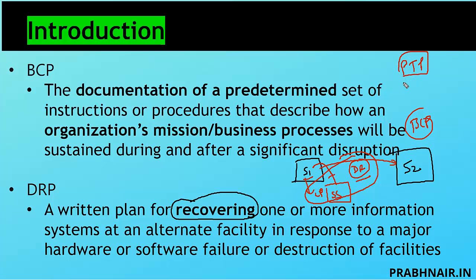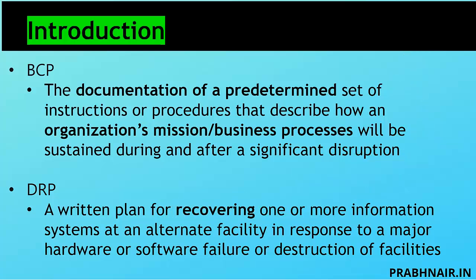We have a standard called ISO 22301, which talks about how to build the BCP system in an organization. Companies go for audit based on BCMS, also known as ISO 22301. In this session, I'm going to cover only the mandatory checklist required for conducting a BCP audit.